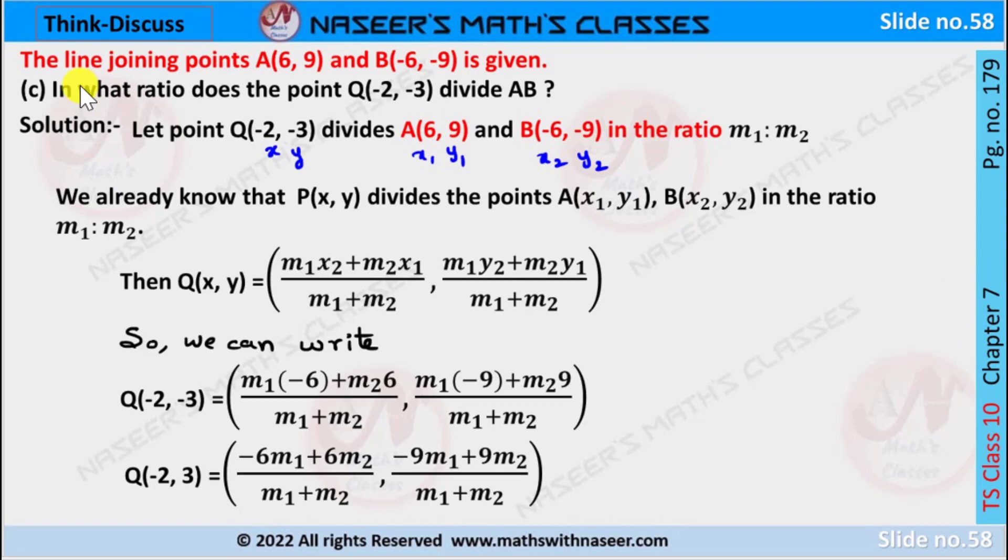The line joining the points A(6,9) and B(-6,-9) is given. Part C asks: if the point Q(-2,-3) divides AB, then let Q(-2,-3) divide point A(6,9) and B(-6,-9).